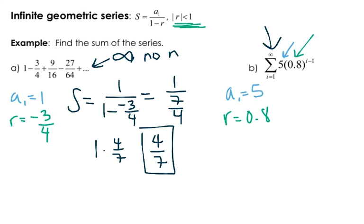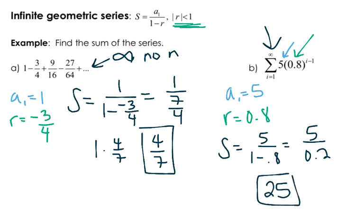So I'm just going to plug this in. The sum, remember there's no n because it's infinite, is a sub 1 is 5 over 1 minus 0.8. Or I've got 5 over 0.2. 5 divided by 0.2 gives us a sum of 25.